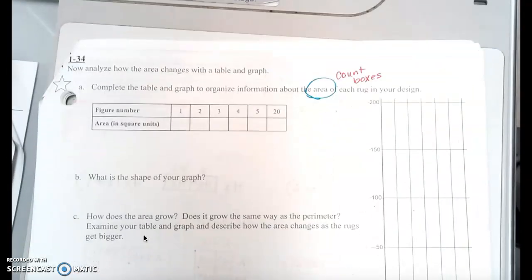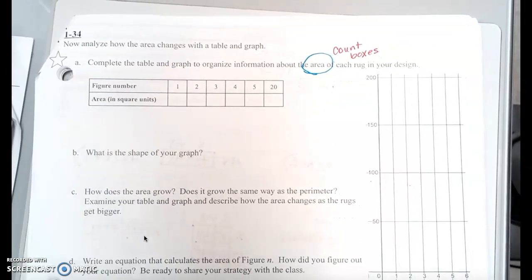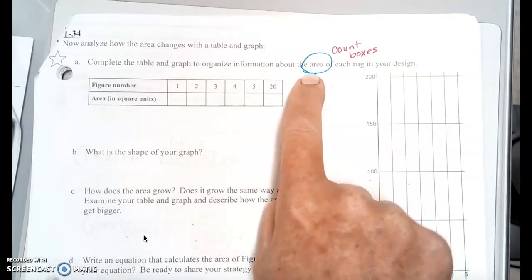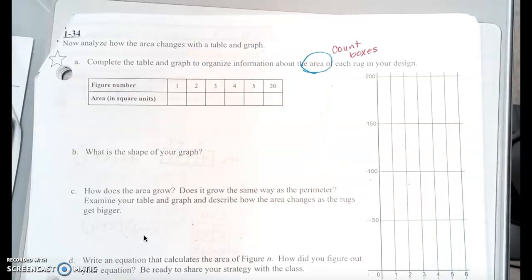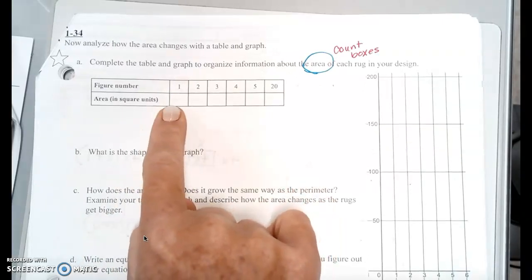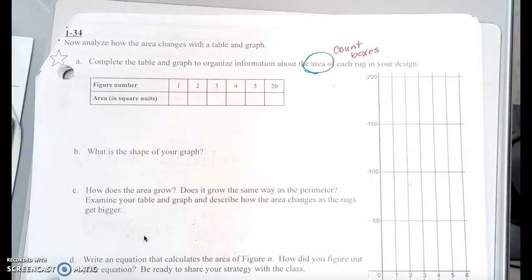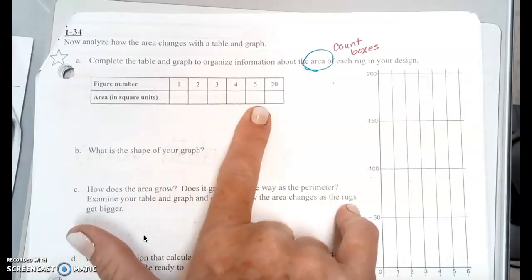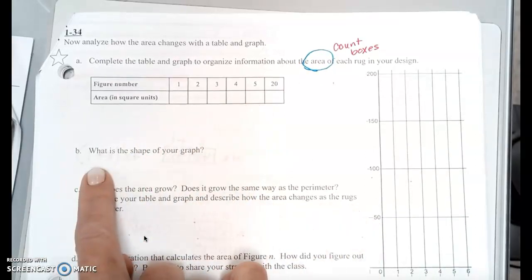Turn over to the top of page 13. It changes just slightly. Instead of asking you for the perimeter, now it's going to ask you for the area. The area in this case is going to be the boxes. Count how many boxes it has. So this one has five boxes. You would write that down right there. Now analyze how the area changes with a table and graph. Complete the table and graph to organize information about the area of each rug in your design. Fill in the chart, just like you did for perimeter. Then you're going to do the graph.